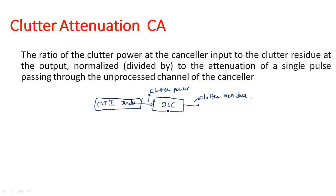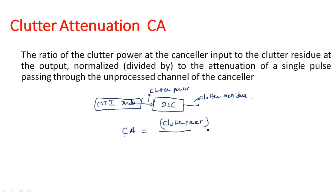The purpose of the delay line canceller is to eliminate stationary targets — that is, clutters — from the received signal. So clutter attenuation tells how much attenuation there is in the clutter after passing through the delay line canceller. Clutter Attenuation = (Clutter power at the input of delay line canceller) / (Clutter residue at the output of delay line canceller). This factor decides the amount of clutter residue present in the MTI radar output.